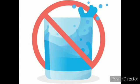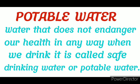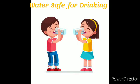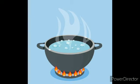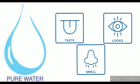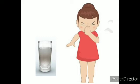But still such water cannot be used for drinking. Now let us see what is potable water. Water that does not harm our health in any way when we drink it is called safe drinking water or potable water. The water that we drink must be safe for our health. That is why we boil water, or at home we also have an additional water filter for drinking water. Pure water has no taste, smell, or colour. If water has a colour or foul smell, we must not drink it as it can make us ill.